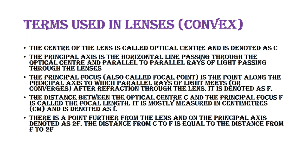The principal focus is the point where all rays of light meet after refraction through the lens. The distance between the optical center and the principal focus is called the focal length of the lens. There is also a point further from the lens on the principal axis called 2F, where the distance from C to F equals the distance from F to 2F.